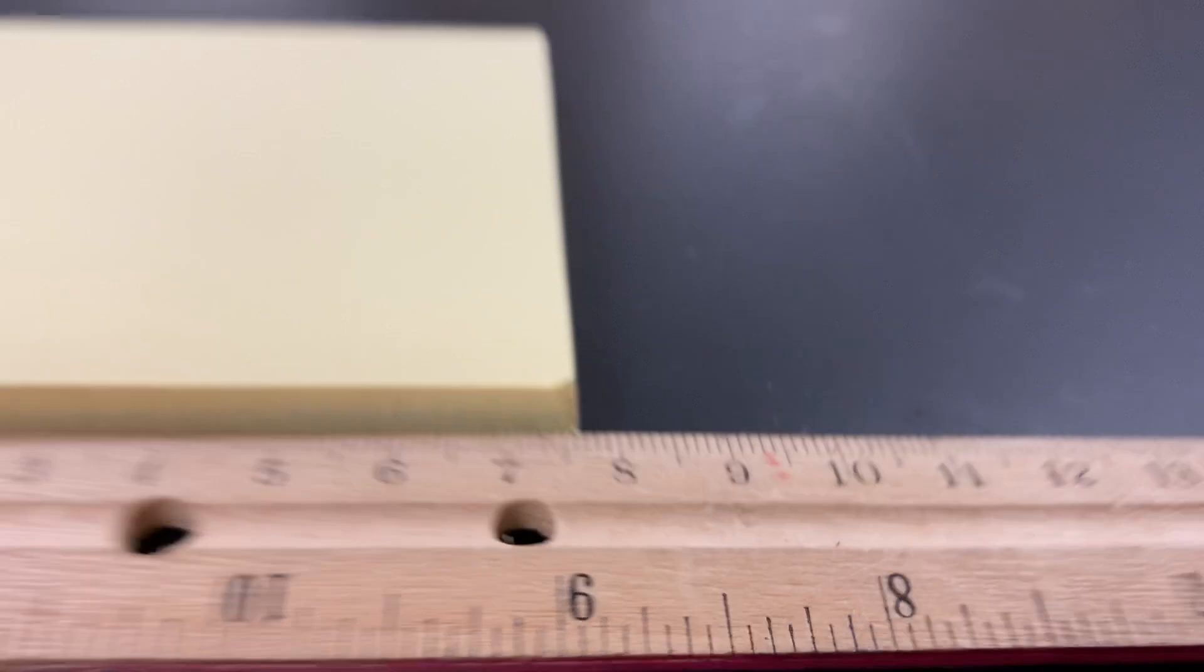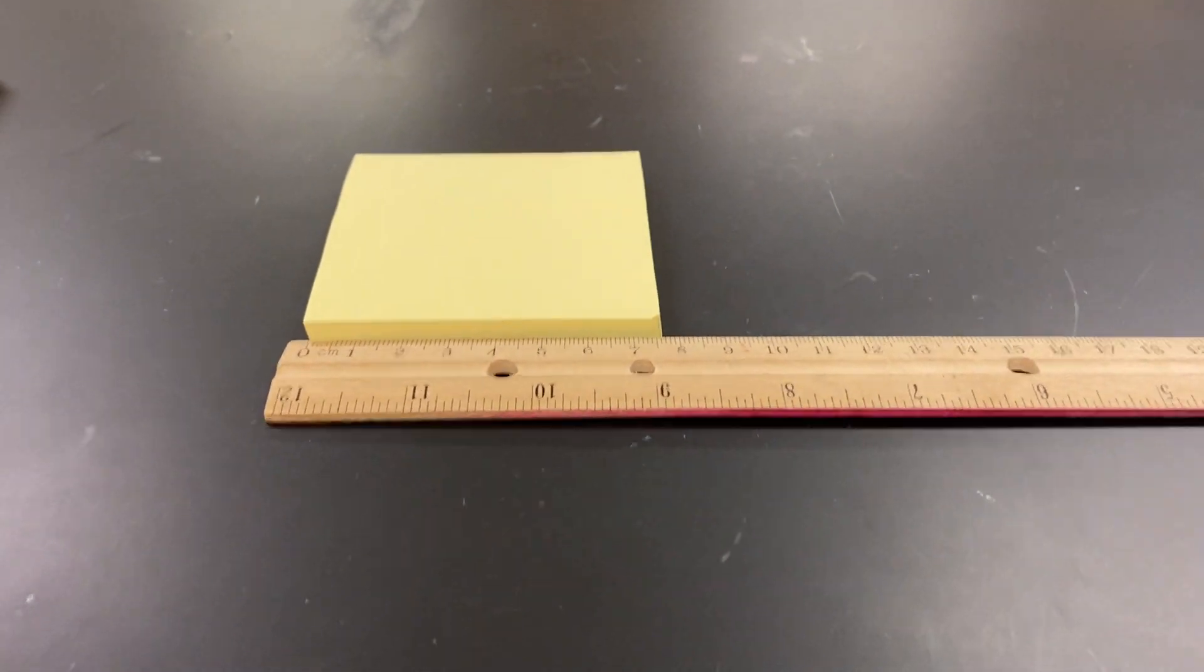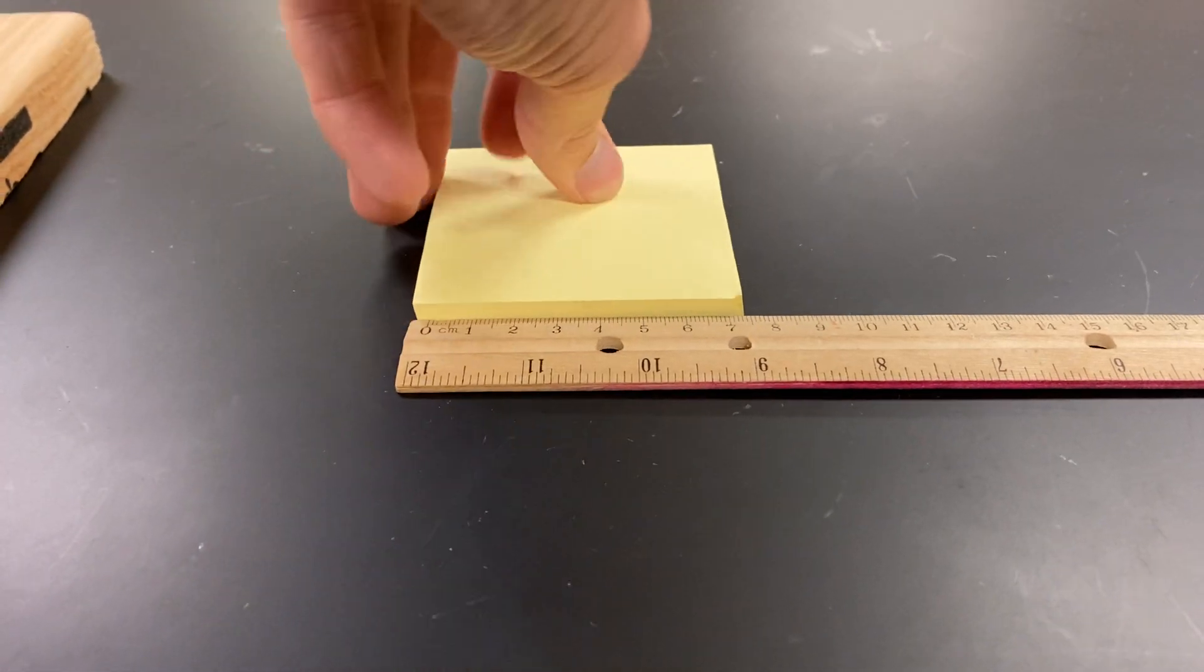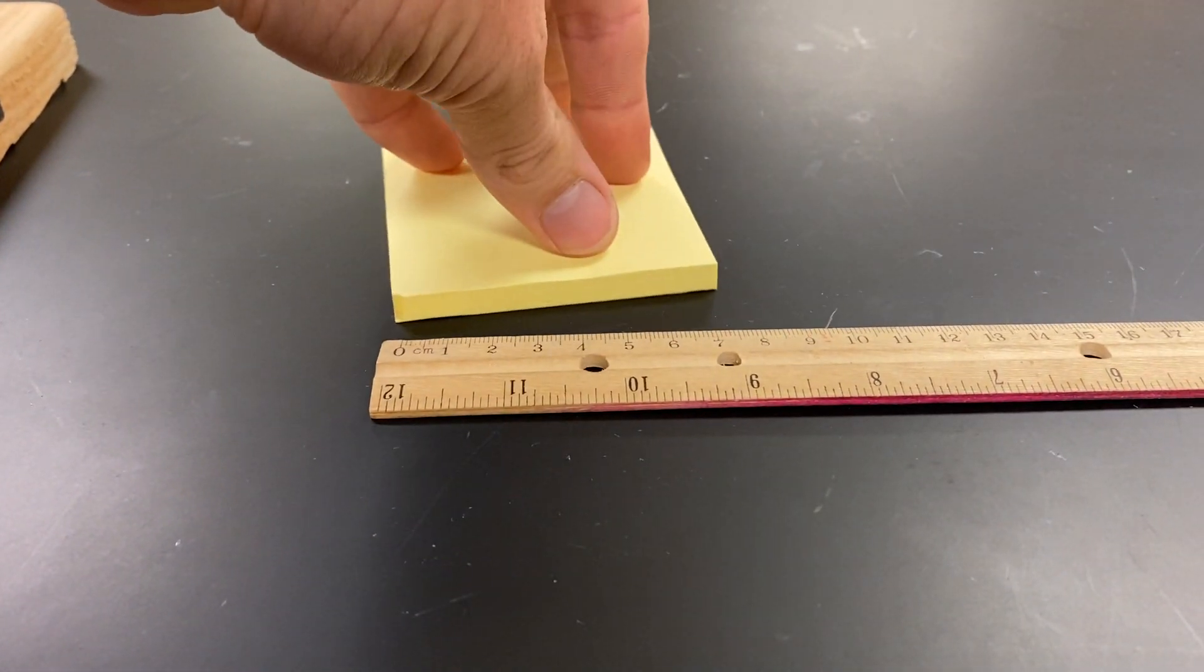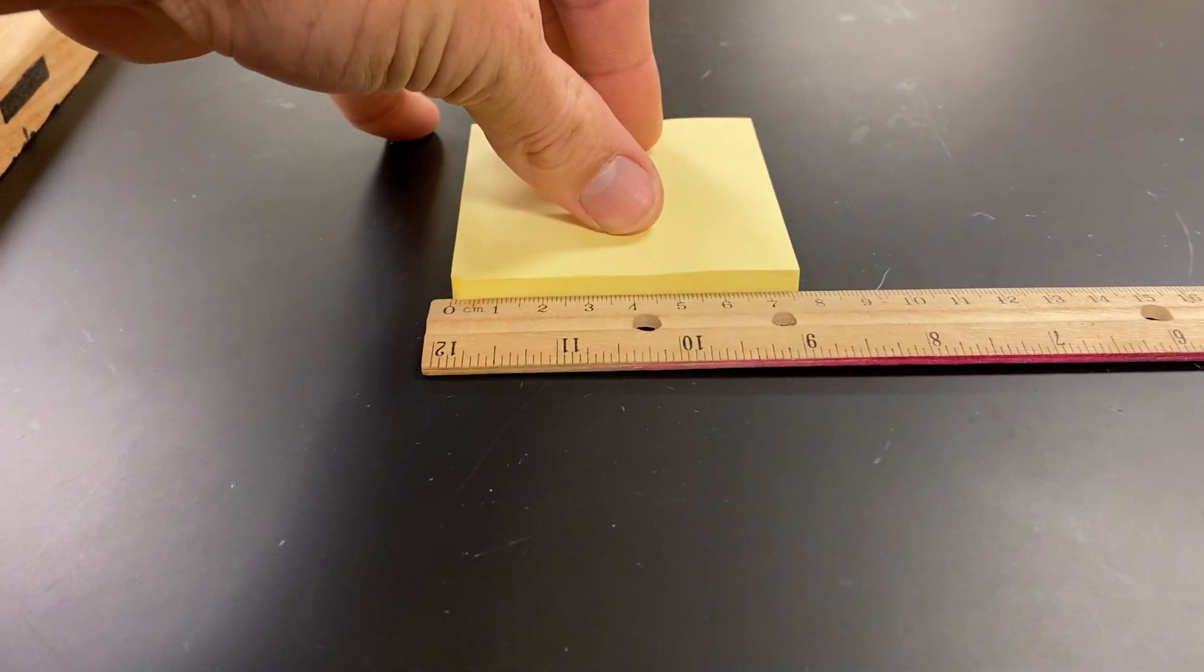Next we're going to find the width of the sticky pad. So I'm going to turn it over, and let's find the width. Is it a true square? That is the question.